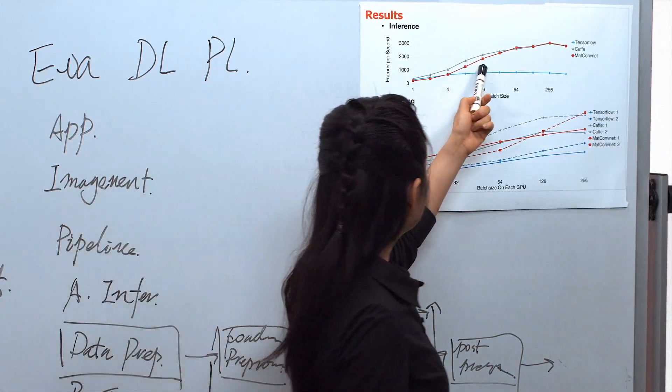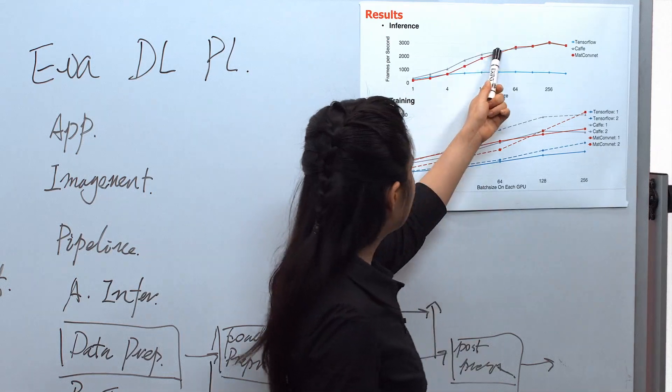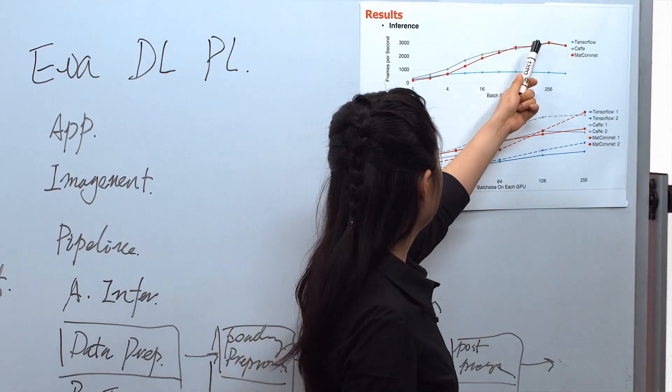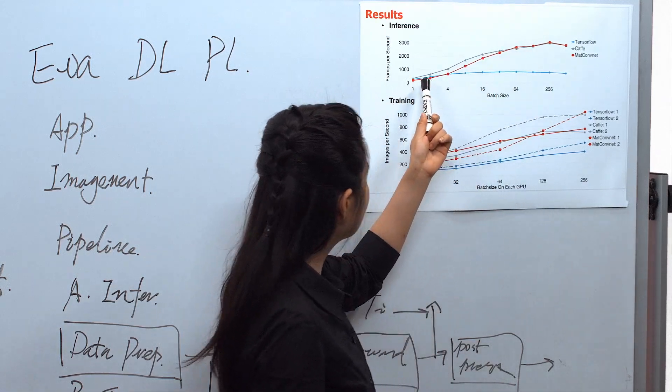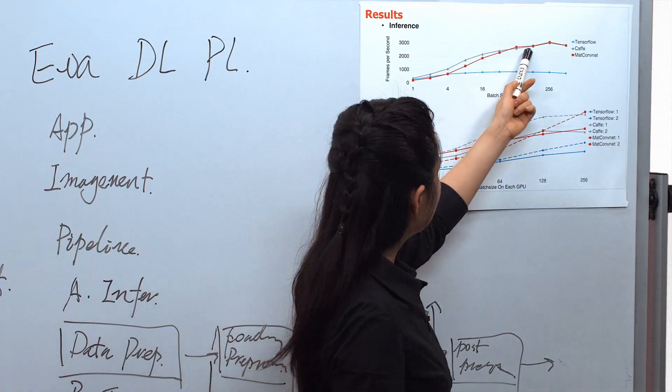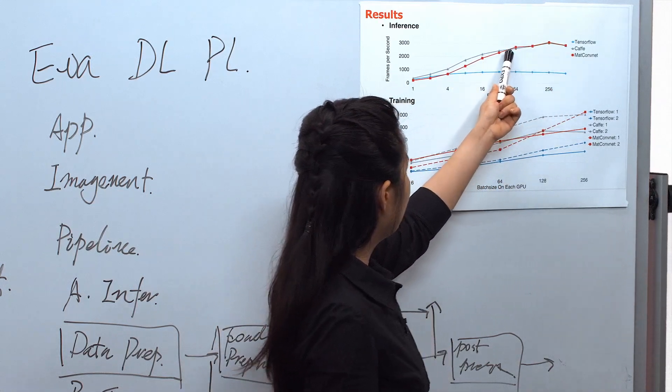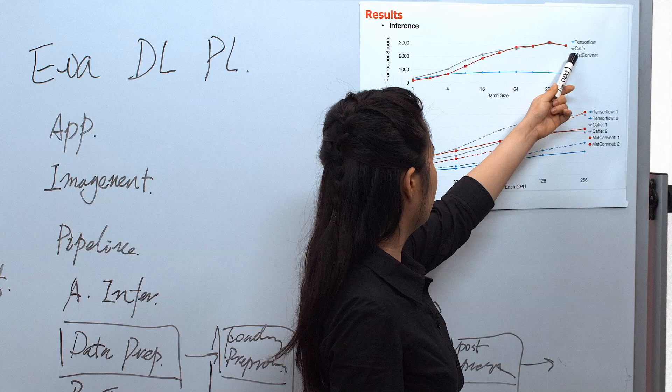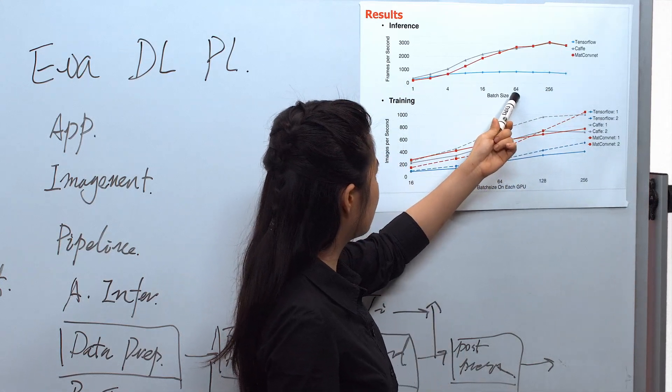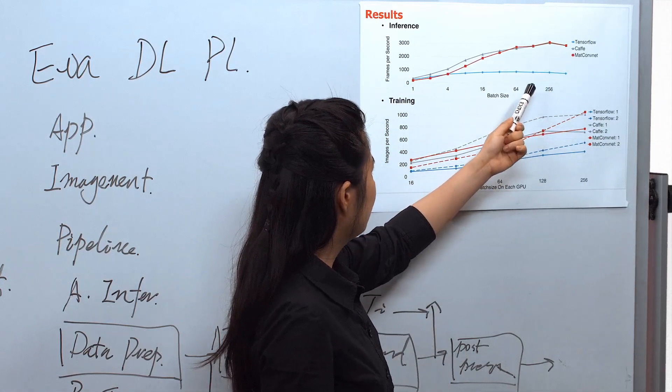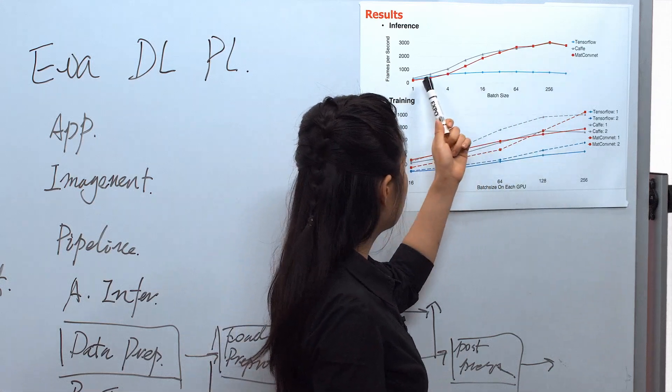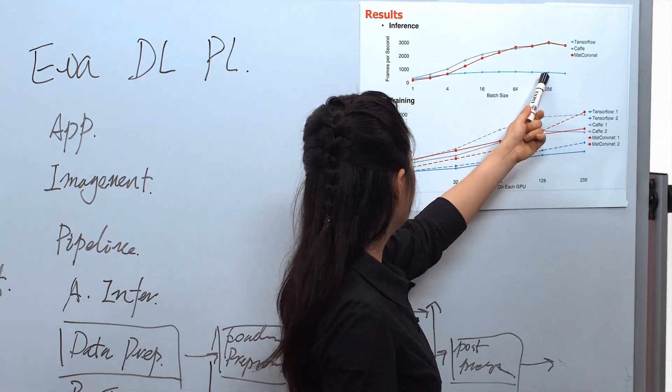As we see in the results, the green line stands for Caffe and it works quite fast. The red one is MXDCOMnet. It matches the performance of Caffe when the batch size is large. TensorFlow seems to be very slow at this point.